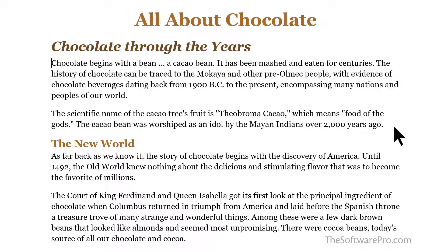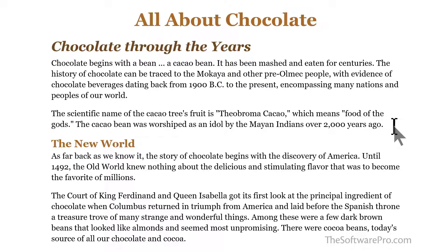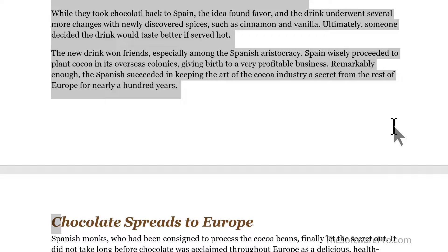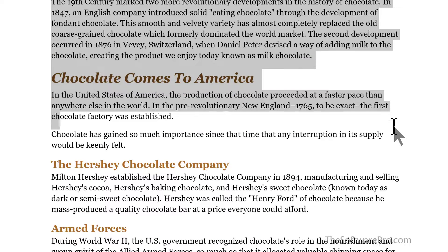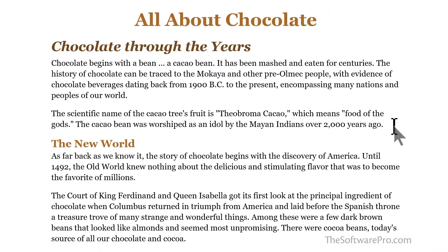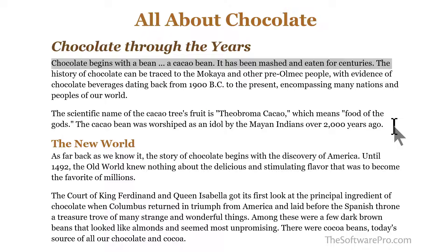Working with the Shift key will give you more control over what you want to highlight. Simply move to the beginning of the text you want to select, hold down Shift, and then add your direction keys — to the right, down, left, up. We can even press Page Down and continue Page Down. The whole time, I'm holding down my Shift key. Page Up, or let's go back to the beginning. I could hold Shift and the End key, which moves to the end of the line at my current location.